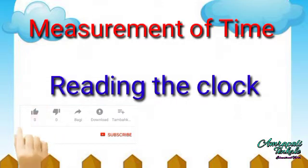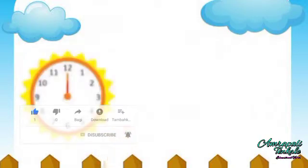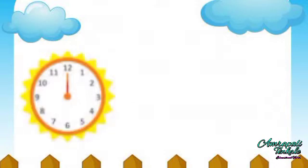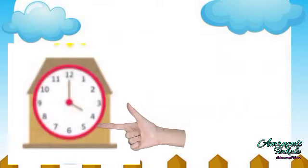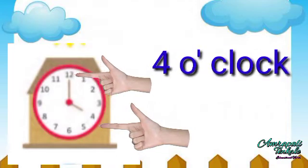Let's read the clock. Today I have brought a big clock to help you learn. Look at the long hand and the short hand of the clock. When both are at 12, it is 12 o'clock. When the short hand is at 4 and the long one at 12, it is 4 o'clock.